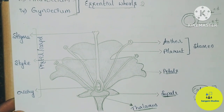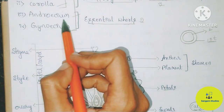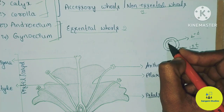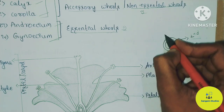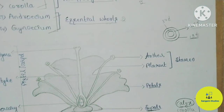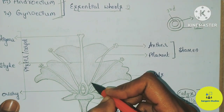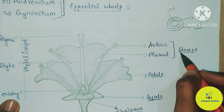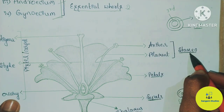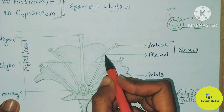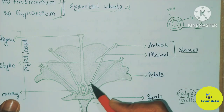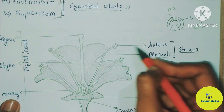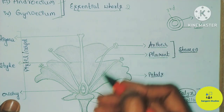The third whorl is the Androecium, which is the male reproductive part of the flower. The individual unit of Androecium is the Stamen. The Stamen consists of a long slender-like structure called the Filament, and at the tip of the filament is the Anther. This is the complete structure of the male reproductive part.